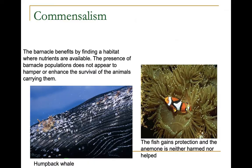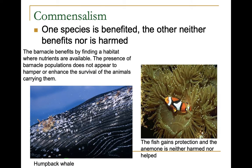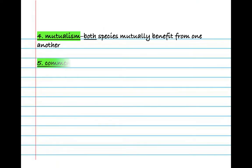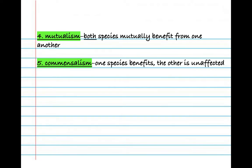Our next example is commensalism. In commensalism, one species benefits and the other is neither harmed nor benefited — it's indifferent. A humpback whale has barnacles living on it that obtain their food and a place to live, while the whale is no worse for the wear. Similarly, the clownfish gets protection from the anemone because most organisms are stung by it, but the clownfish's special mucus coating protects it — while the anemone gets no particular benefit or harm. In commensalism, one species benefits and the other is completely unaffected.